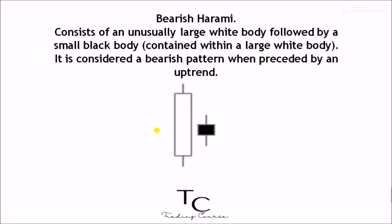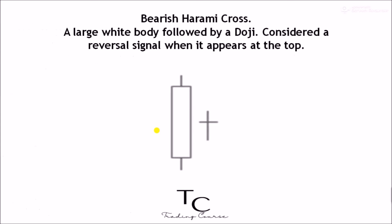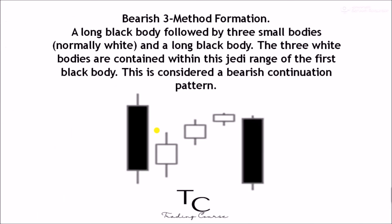Complex patterns: Bearish harami — consists of an unusually large white body followed by a small black body contained within the large white body. Considered a bearish pattern when preceded by an uptrend. Bearish harami cross — a large white body followed by a doji; considered a reversal signal when it appears at the top. Bearish three method formation — a long black body followed by three small bodies, normally white, and a long black body. The three white bodies are contained within the range of the first black body. This is considered a bearish continuation pattern.